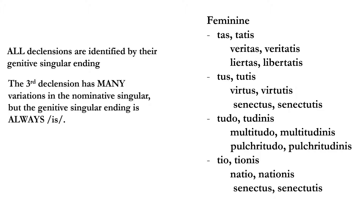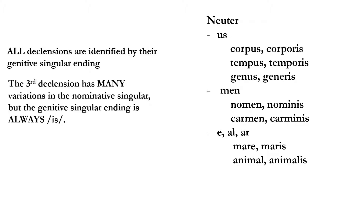Now for the neuter endings — this is really where you'll see the variety. Starting with common ones: corpus/corporis (body — as in 'corpse' or 'Corpus Christi,' meaning 'the body of Christ'). Tempus/temporis (time), genus/generis (kind/type). The '-men'/'-minis' pattern: nomen/nominis (name), carmen/carminis (song/poem). At the bottom, the '-al'/'-aris' and '-ar'/'-aris' endings: mare/maris (sea), animal/animalis, and so on. The third declension is really extensive — this slideshow only covers the basic parts.